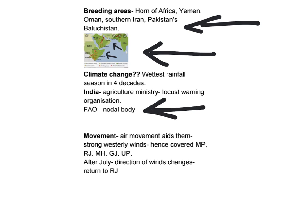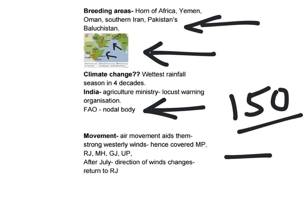Since they travel 150 kilometers per day, how does that happen? Usually they travel in the direction of the wind, so air movement aids them. Strong westerly winds come from the Mediterranean region, passing through Iran, Pakistan, and then Punjab, Rajasthan, till the Bay of Bengal — these are the winds that aid the movement of these locusts.